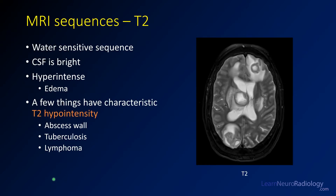T2 is a nice corollary to FLAIR — the same image from the same patient looks very similar, only the CSF is not suppressed. There are a couple of things where T2 can help you: certain pathologies have a characteristic T2 hypointensity. The walls of an abscess, for instance, appear dark on T2 — so if you see something with a dark wall, think abscess. Tuberculosis and lymphoma also characteristically have low T2 intensity, and while you can see this on FLAIR, it can be a little more conspicuous on T2.